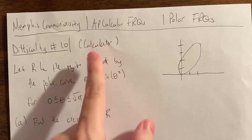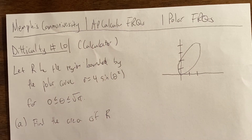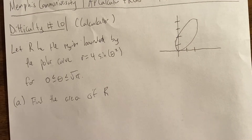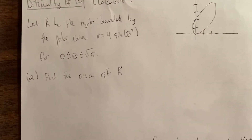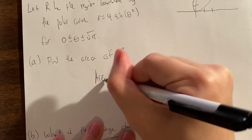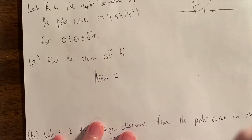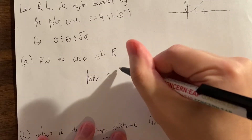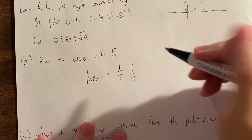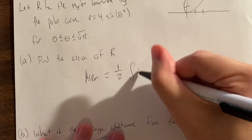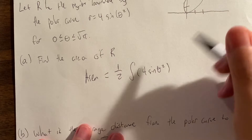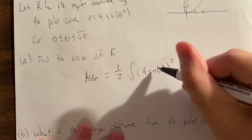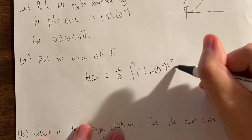Looks like we have a calculator here, which is great, so we can type these in our calculator. We have our standard first question on polar free response questions: area. Remember that area — you definitely want to get at least two things right in the area formula. You always want the one half and you always want the r squared. In this case, the r is given to us, so it's not too bad. We can also do this integral in a calculator, so that won't be bad as well.